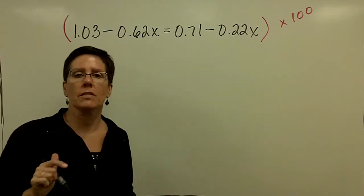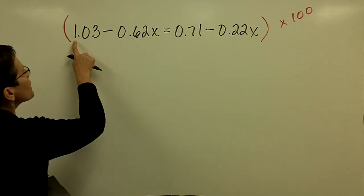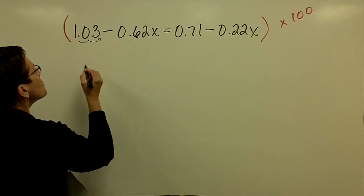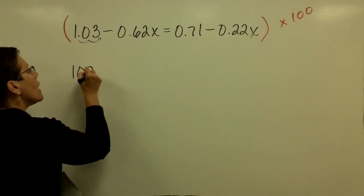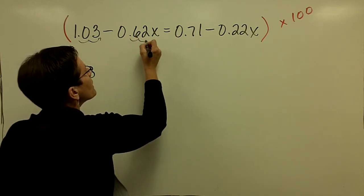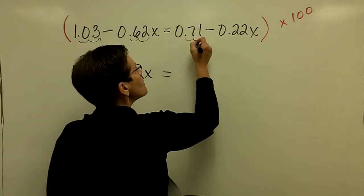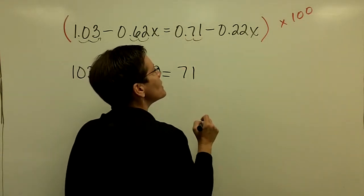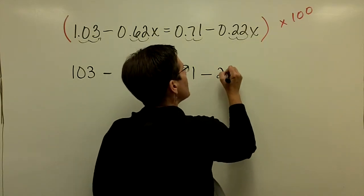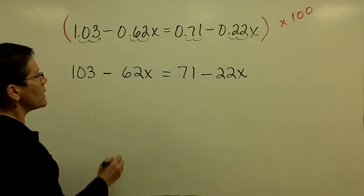Because the farthest position in terms of a decimal value is in the hundredths place. So when I multiply 1.03 by 100, I just move the decimal place two places to the right and I get 103. And when I multiply 0.62 by 100, I get 62. And when I multiply 0.71 by 100, I get 71. And when I multiply 0.22 by 100, I get 22. Oh man, it is so much easier working with whole numbers in my opinion.